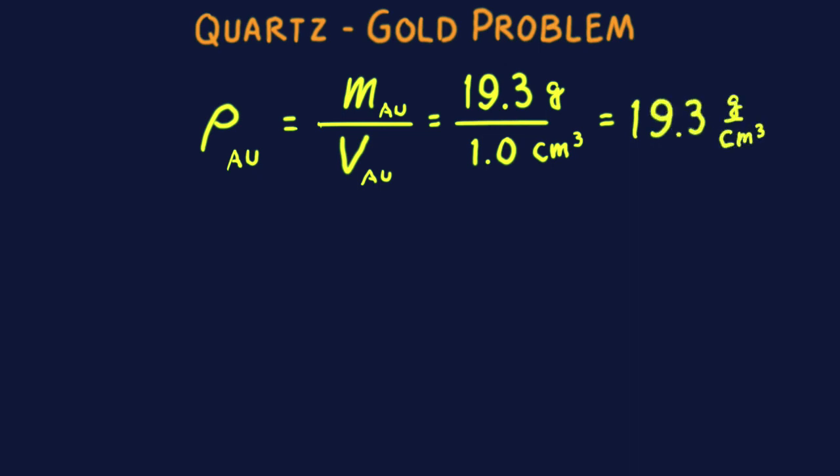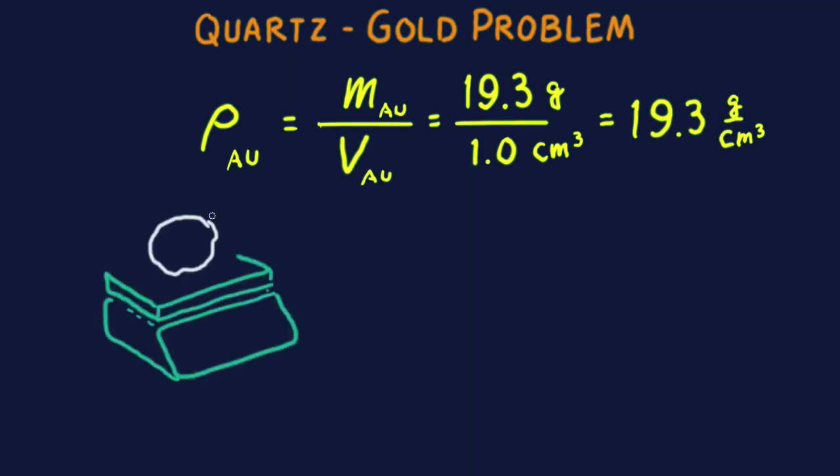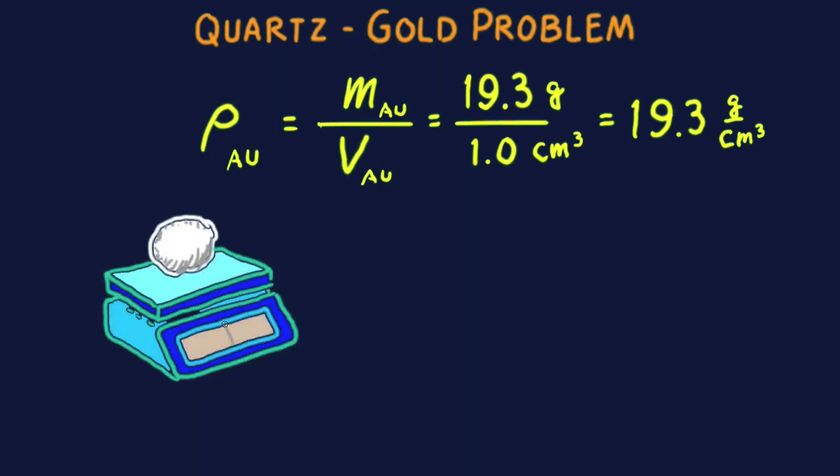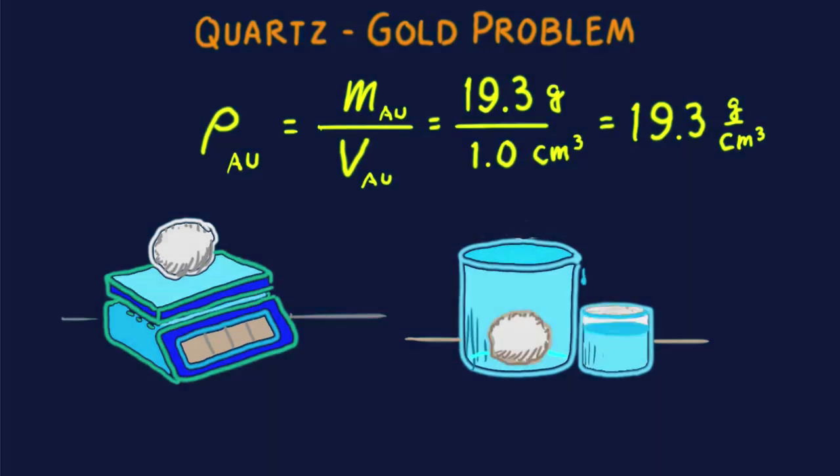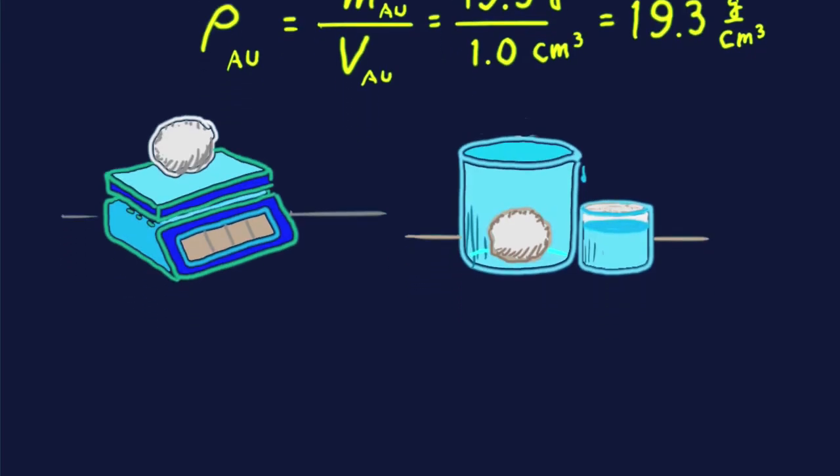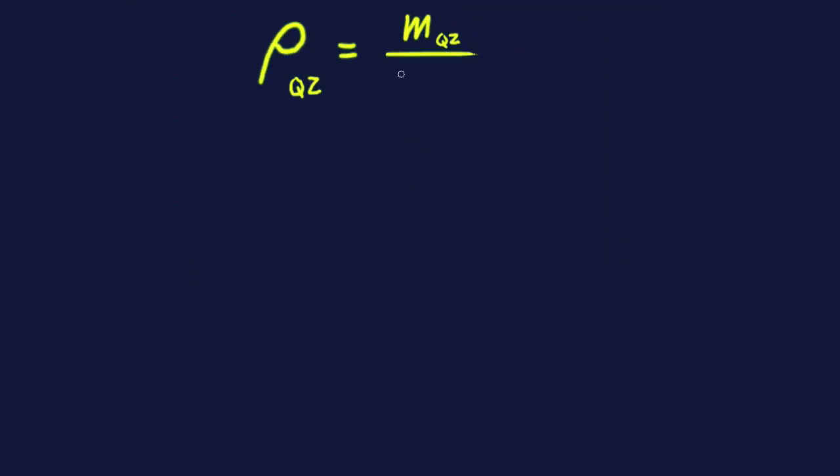If you have a chunk of pure quartz mineral, you can calculate its density by first measuring its mass on a scale and then dividing by its volume. You can find its volume with the overflow method. Dunk the chunk in a container brimful of water and catch the water that overflows. Measure the volume of the overflow water, which is the same as the volume of the chunk. If you do this accurately, you'll find the density of quartz is 2.65 grams per cubic centimeter. We abbreviate the subscript for quartz to QZ.